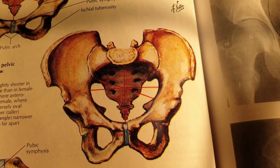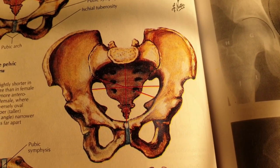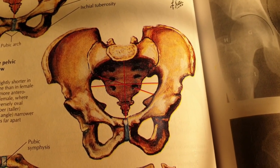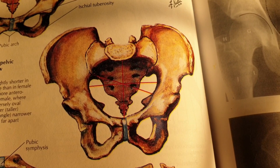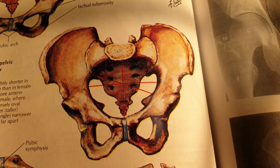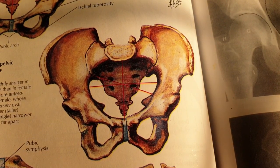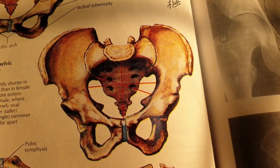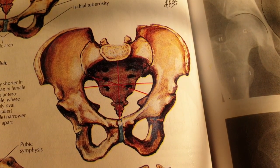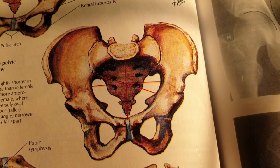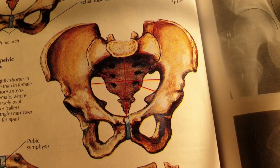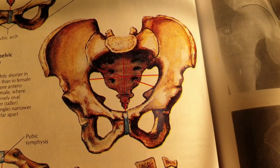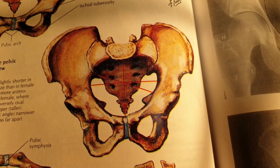Today we are going to study the hip bones. There are two hip bones in the body, one on the right side, one on the left side, and both of the hip bones together form the pelvic girdle. The pelvic girdle unites the lower limb with the axial skeleton.